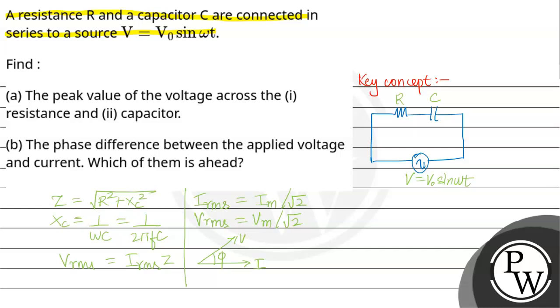First of all, we have to find the peak value of the voltage across the resistance and the capacitor. If you have to take the peak value of the voltage across R, this is important. The peak value of the voltage across R.